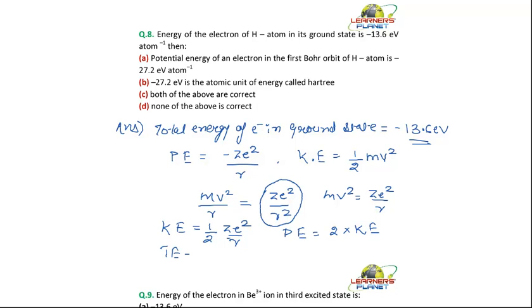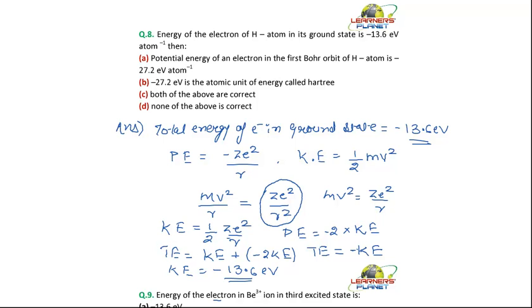The total energy equals kinetic energy plus potential energy. Since potential energy is minus 2KE, the total energy equals kinetic energy minus 2KE, which gives minus KE. So the total energy equals minus the kinetic energy. Since the total energy given is minus 13.6 electron volts, the kinetic energy of the electron is 13.6 electron volts.